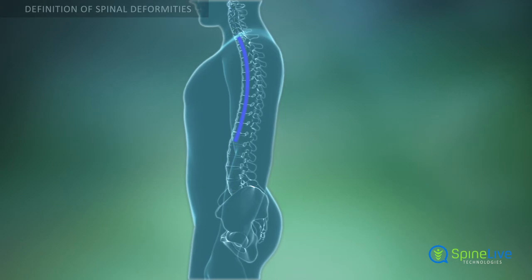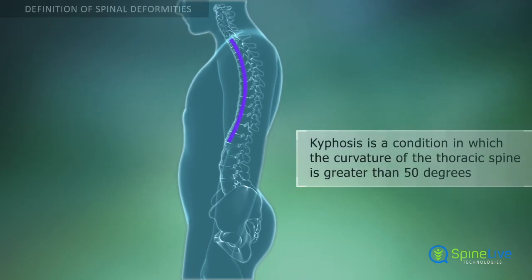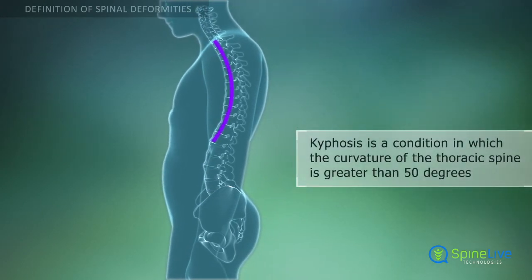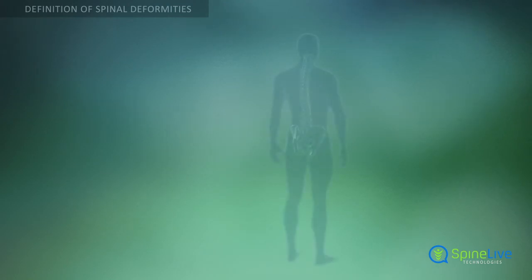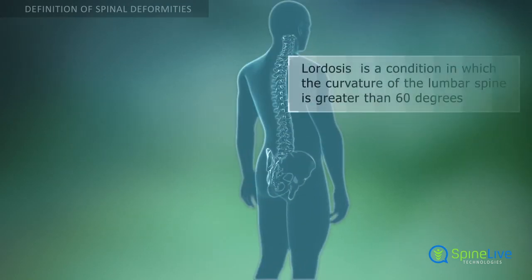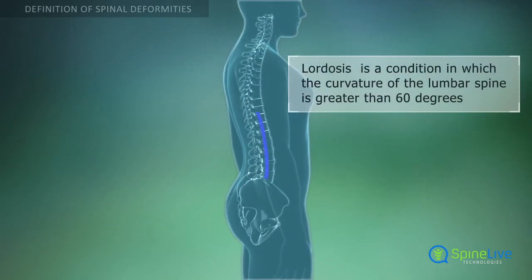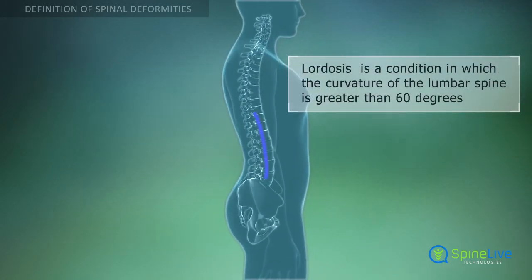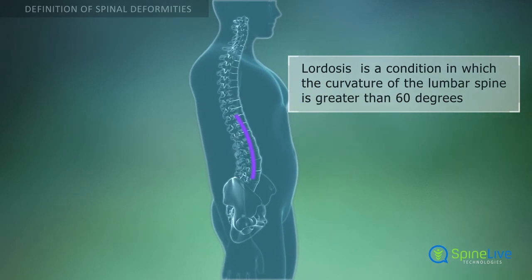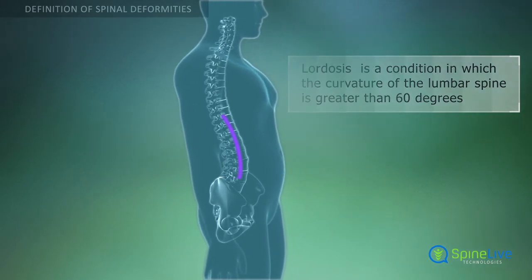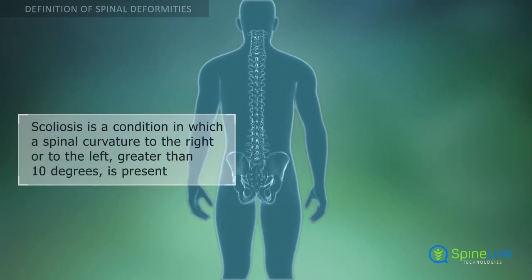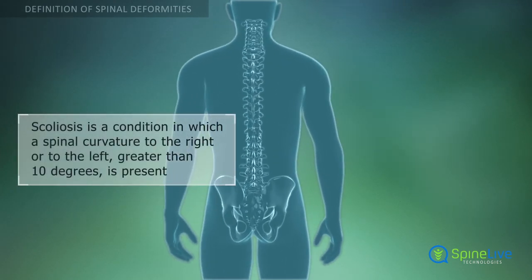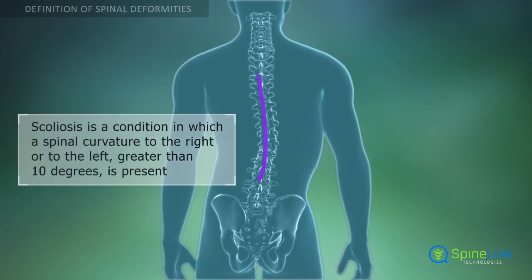Kyphosis occurs when the curve of the thoracic region of the spine is greater than 50 degrees. Lordosis occurs when the curve of the lumbar region is greater than 60 degrees. Scoliosis occurs when a spinal curvature greater than 10 degrees to the right or to the left is present.